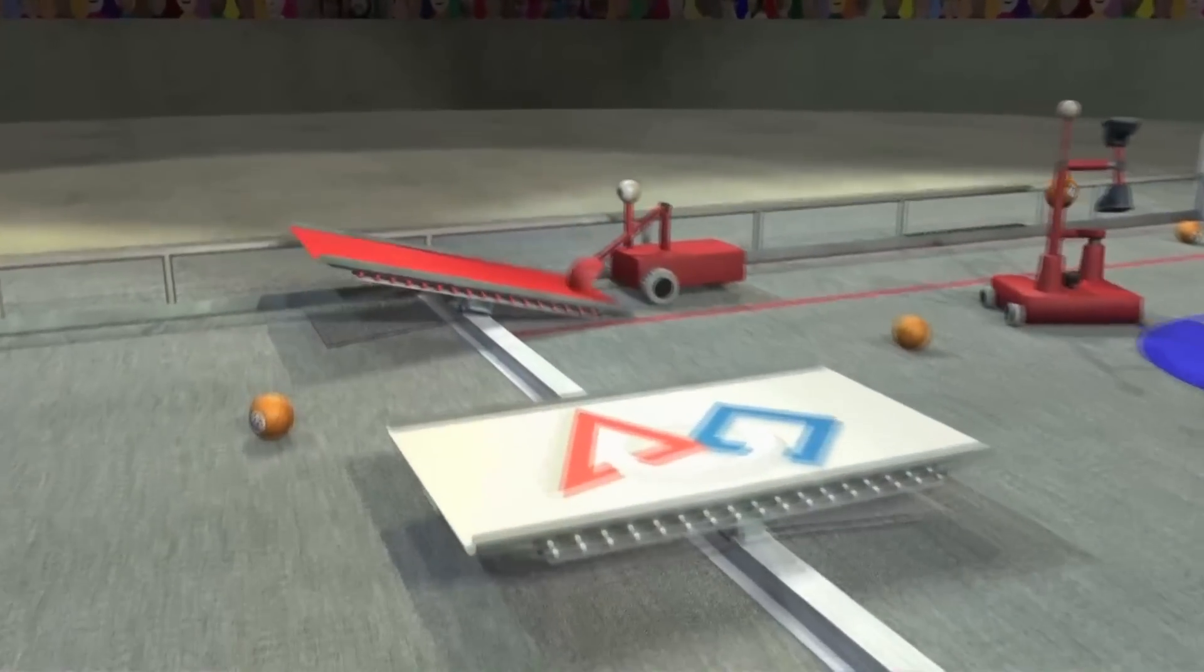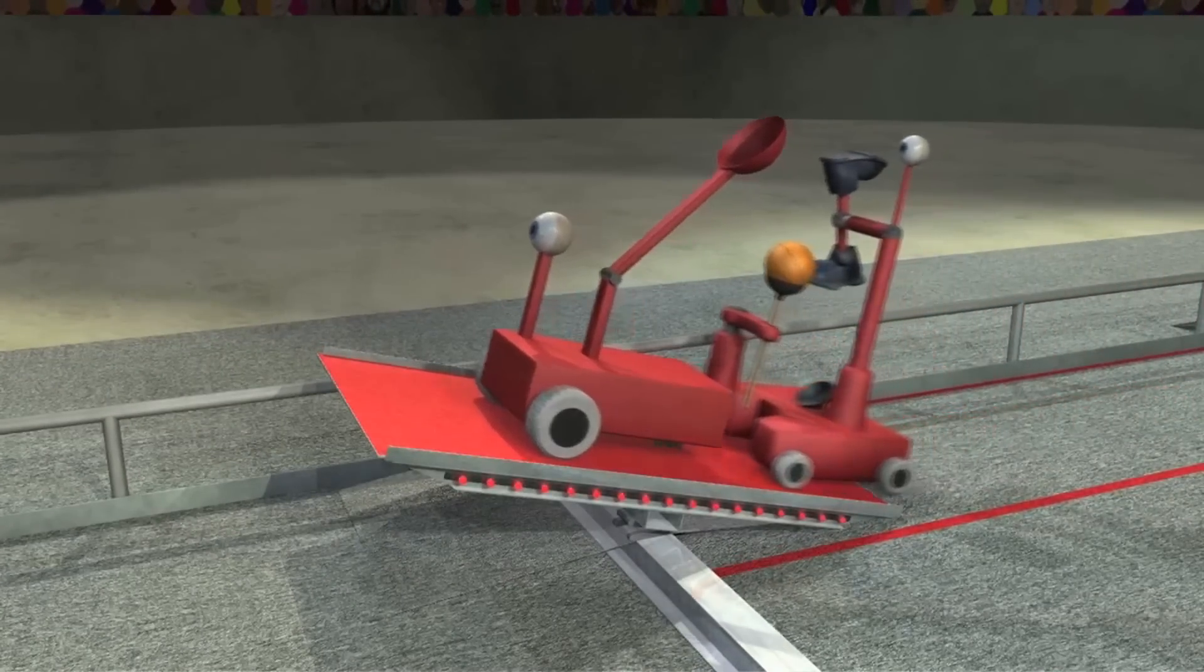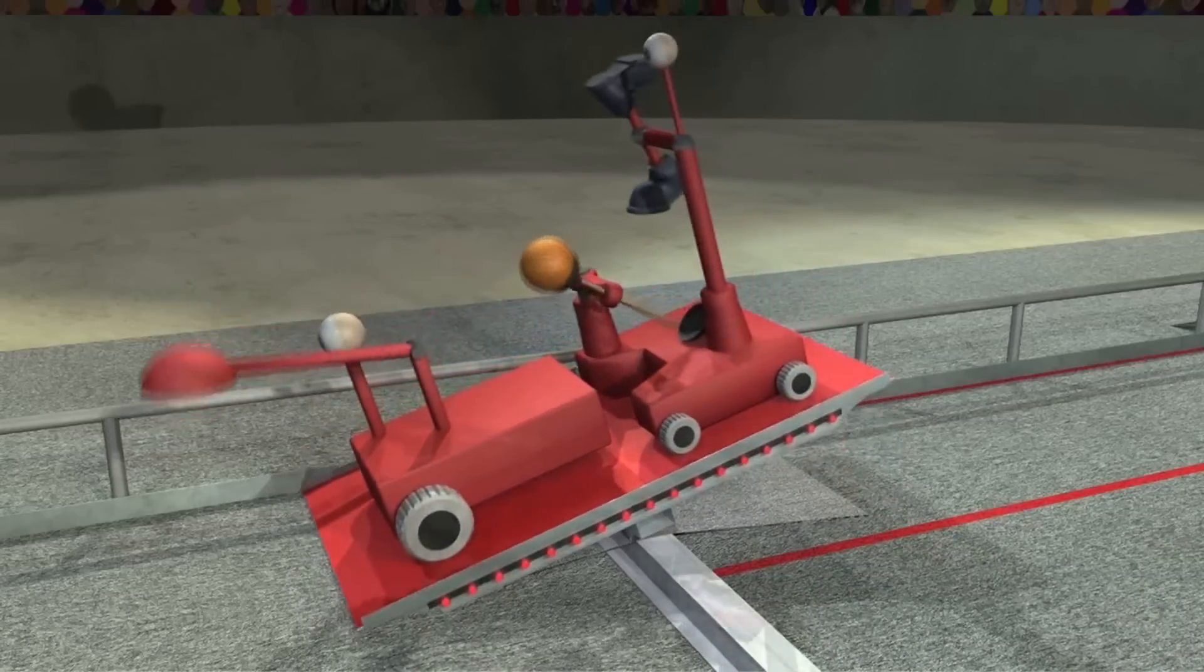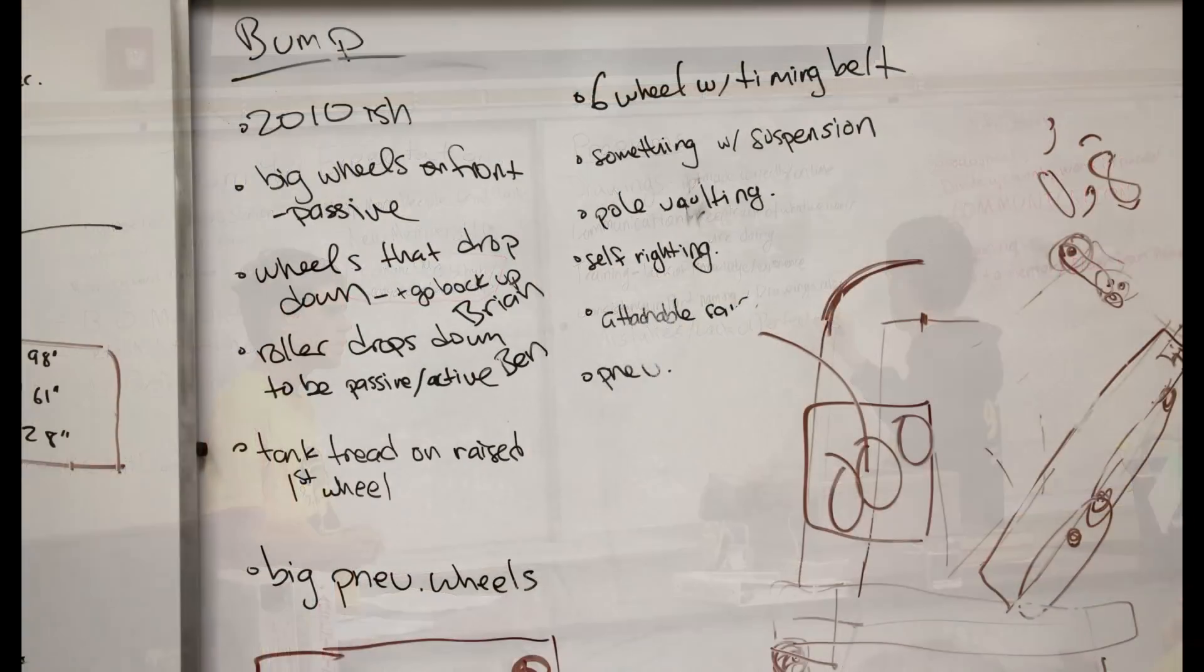Near the end of the match, robots drive onto their bridge and balance it for bonus points. Two robots on their own bridge will get even more points.